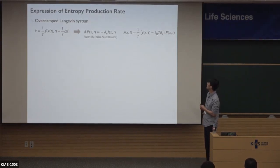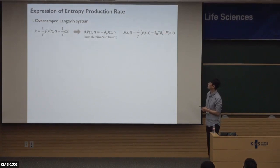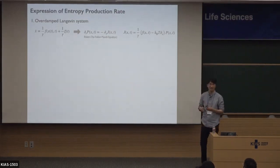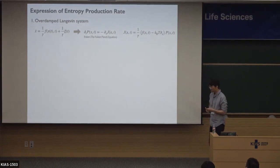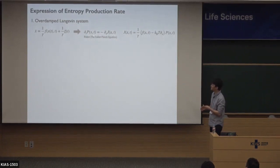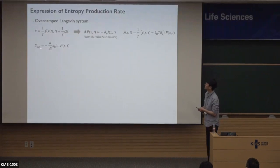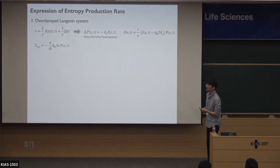If you are unfamiliar with the Fokker-Planck equation, due to time limitations I cannot explain the conversion here, but you can read Risken's book. For now, let's accept that the SDE can be converted to this PDE. The system entropy is given by the Shannon entropy form, minus k_B log of the probability density function, and its time derivative can be calculated using this expression. Because P is a function of X and T, by the chain rule this involves partial derivatives of X and T. When applying the chain rule for overdamped Langevin dynamics, we must use the Stratonovich product.